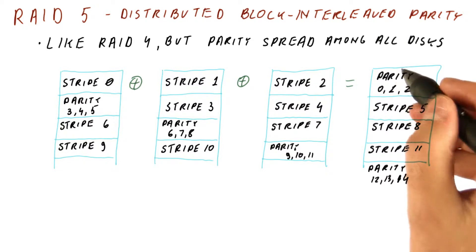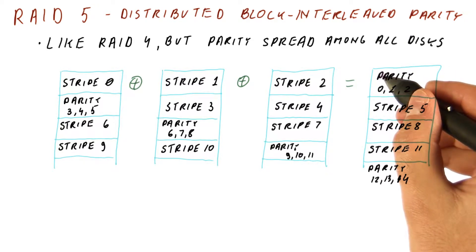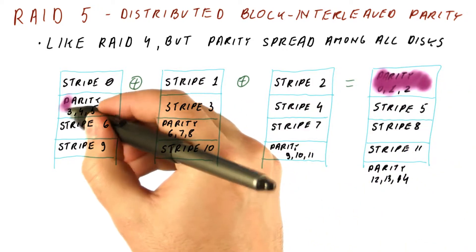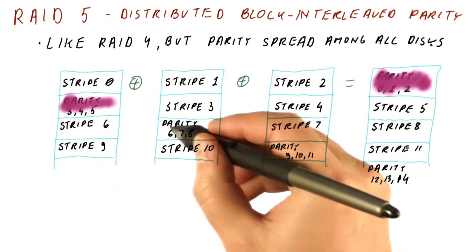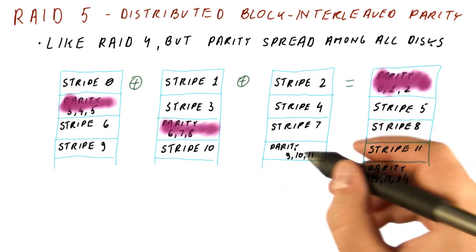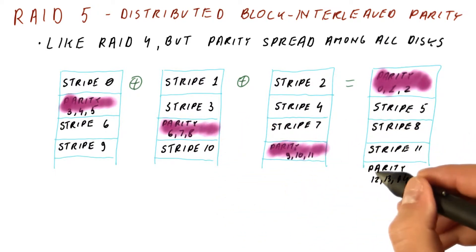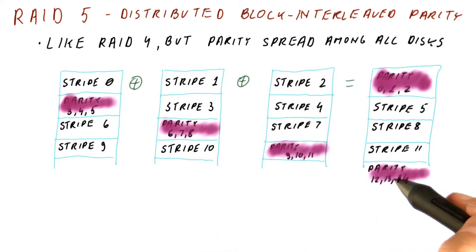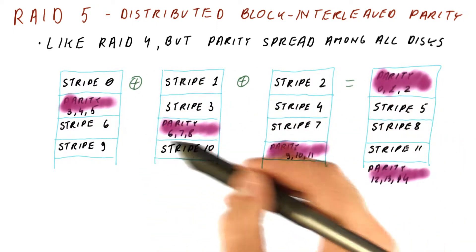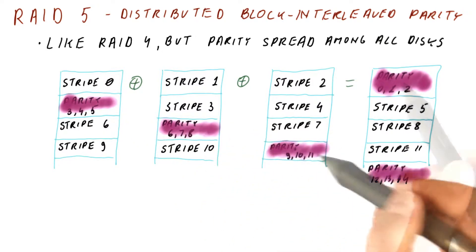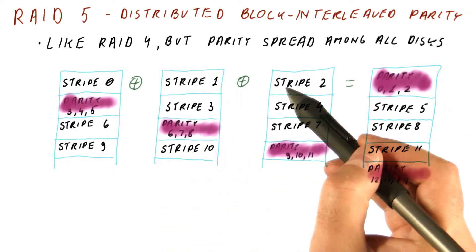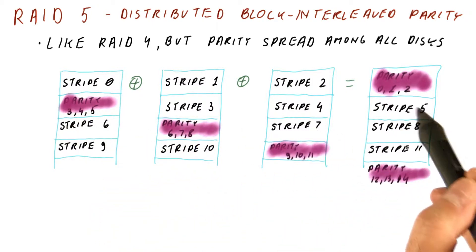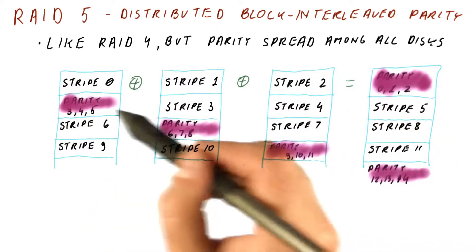So as you can see, the blocked interleaved parity distributes the parity across each disk in turn — here, then here, then here, then here, then again here. So each of the disks will get its fair share of parity. For each set of stripes we will have three stripes of data, and the parity block for the next set of four will have parity in a different place.